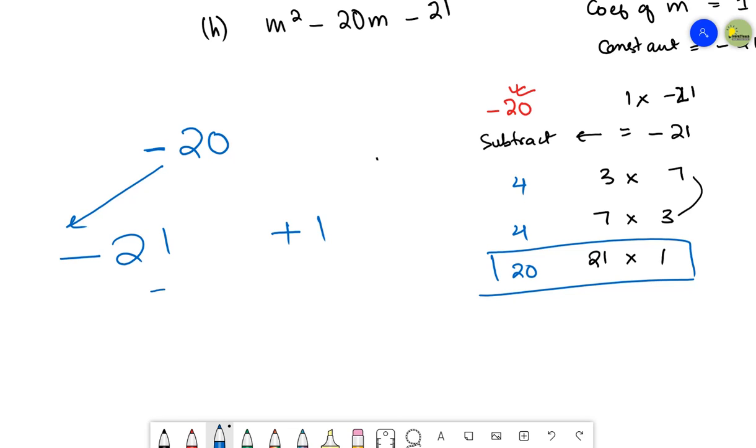This is plus one. Because if I solve -21 and +1, it is going to give me 20 with a minus sign. This means I'll get exactly the middle term with my sign. If I put the middle term's sign with the larger factor, I will get exactly the middle term with the sign.